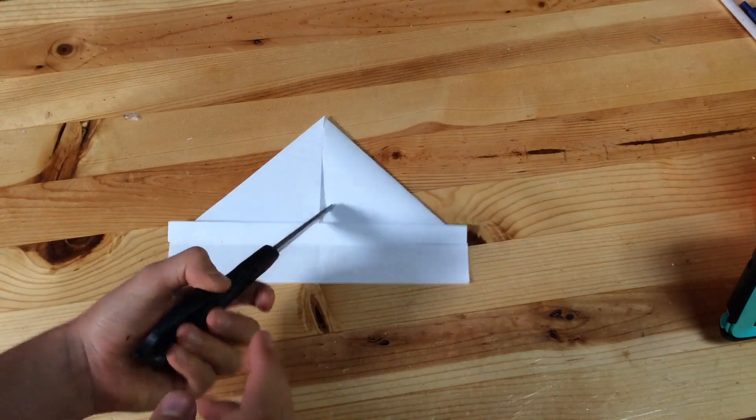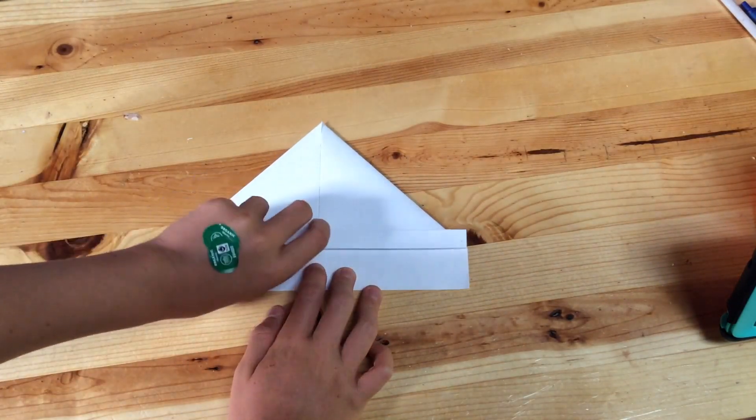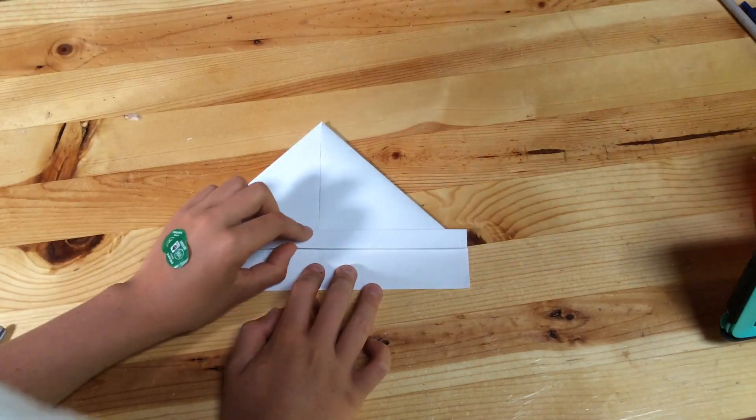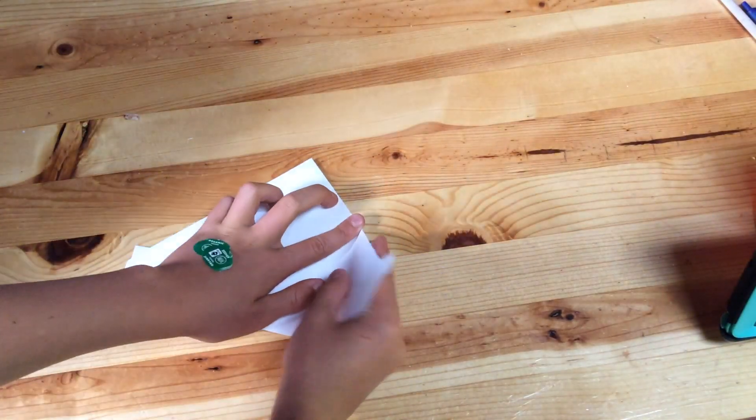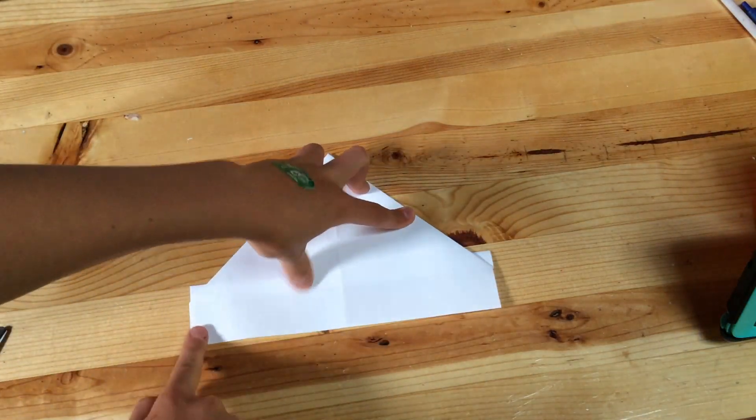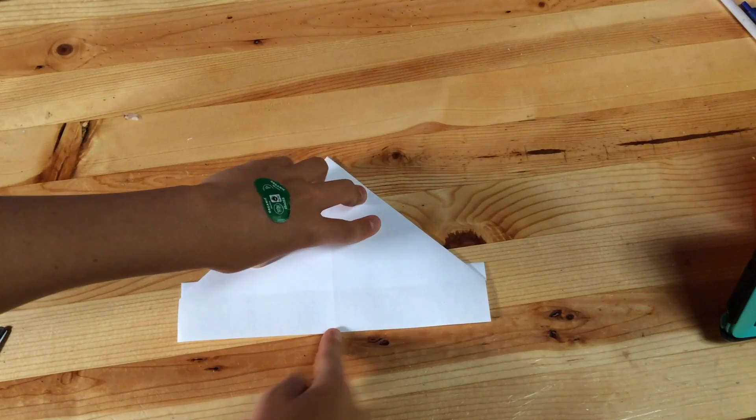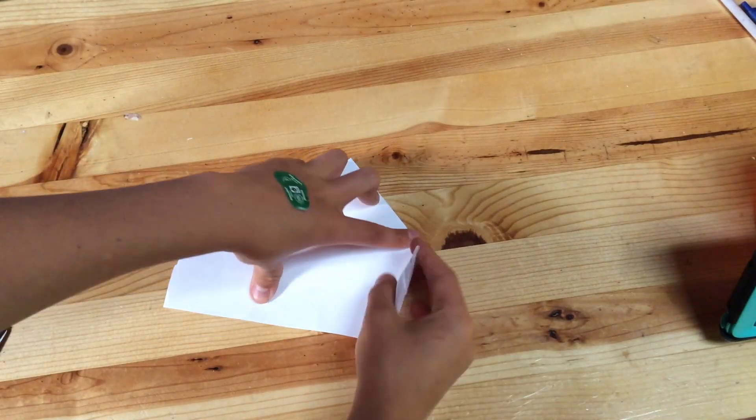So now we have this and what we will do from here is flip it over and then we fold it so then these sides meet the middle crease, the guideline.